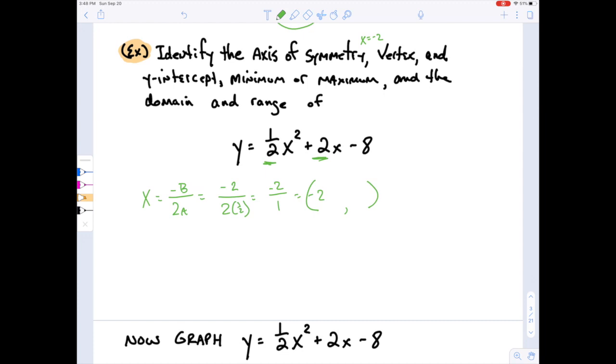For the vertex, I have negative 2 and now I need to plug the negative 2 into the function. So my function is one half x squared, so one half negative 2 squared, plus 2x, so two negative 2s minus 8. And that's going to give me one half of 4 minus 4 minus 8.